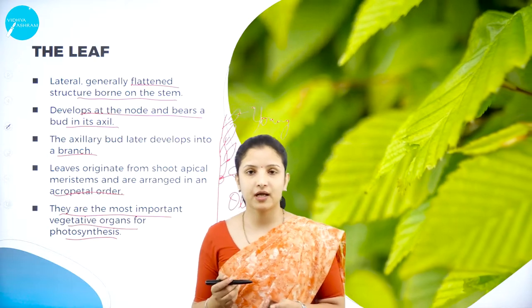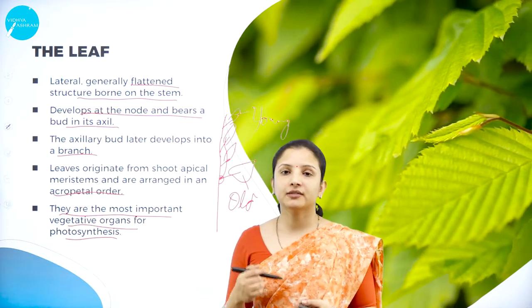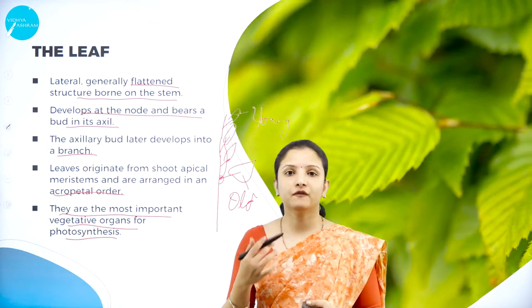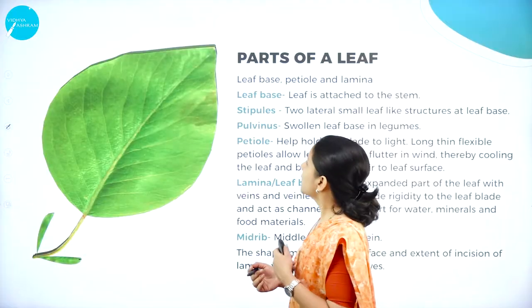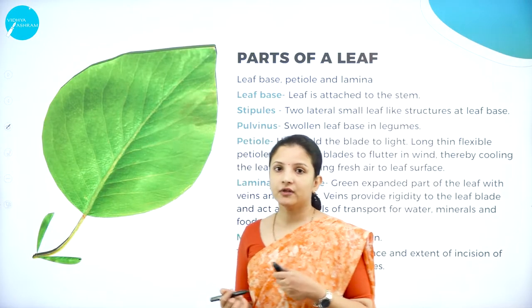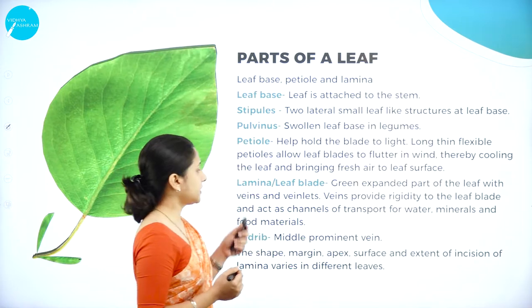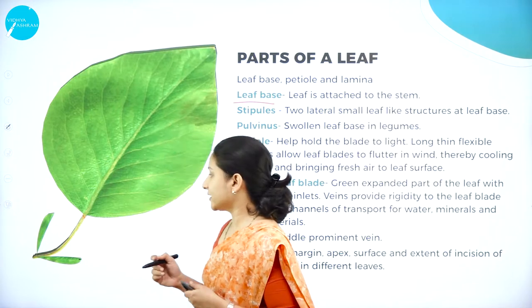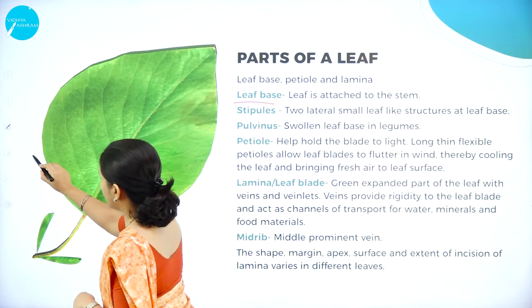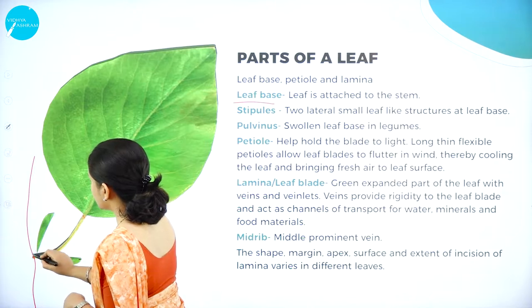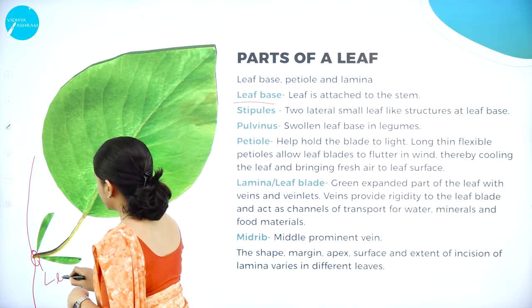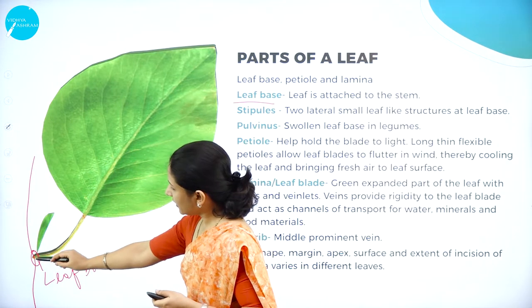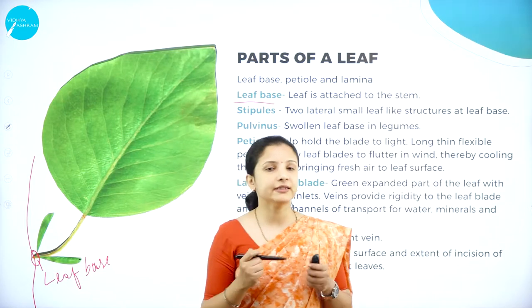The leaves are the most important vegetative organ for photosynthesis because chloroplasts are present in the leaves, and the chloroplasts contain abundant chlorophyll pigments which help in synthesizing food. Moving on to the parts of the leaf — the first part is the leaf base. The leaf base is the region where the leaf is attached to the stem.